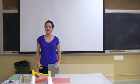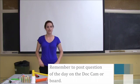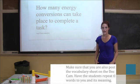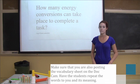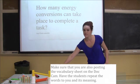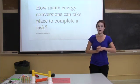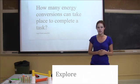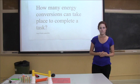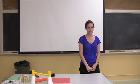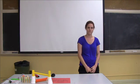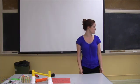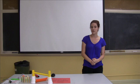Today we're going to be studying energy conversions, and we'll be able to answer our question of the day: how many energy conversions can take place to complete a task? Mr. Mason is going to put the question of the day up on the dot cam and also pass out the Rube Goldberg machine vocabulary worksheet. So what we just saw in the commercial is called a Rube Goldberg machine — it's a machine that uses energy conversions to complete a task. Energy is the ability to do work. Mr. Mason is going to put the definitions of Rube Goldberg machine and energy up on the dot cam.